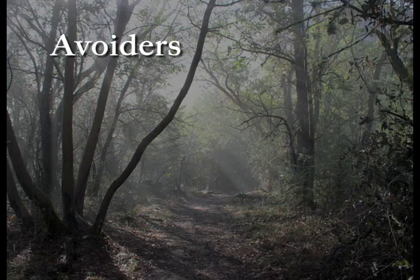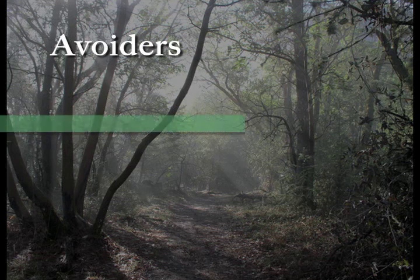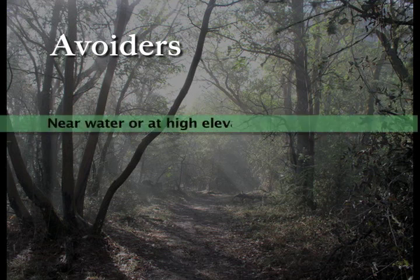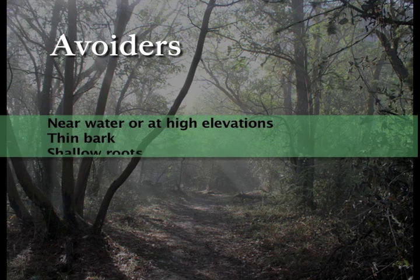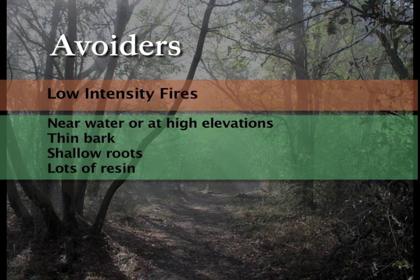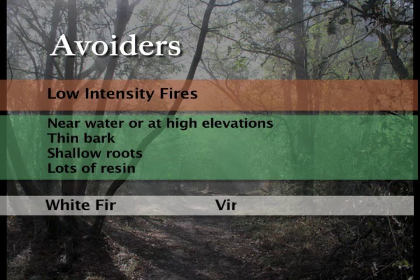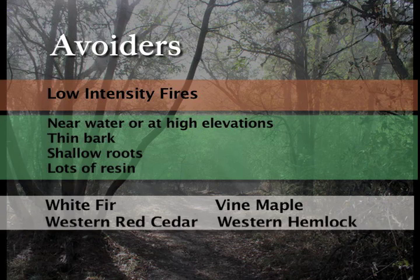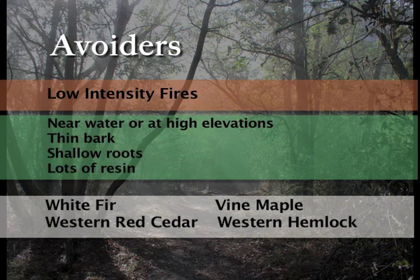Avoiders are least adapted to fire because they grow in areas where fire does not normally occur, typically near water or in high elevations. Avoiders are a late successional species and are not found in recently burned areas. They have thin bark, shallow roots, and lots of resin which can actually help a fire spread. Few avoiders survive moderate to high-intensity fires. Some examples include white fir, vine maple, western red cedar, and western hemlock.